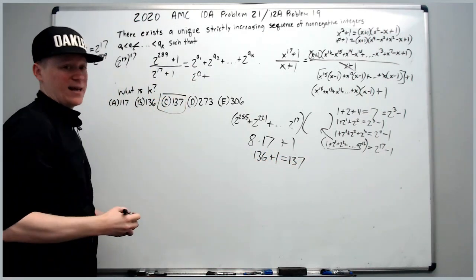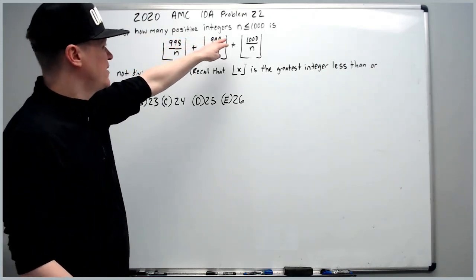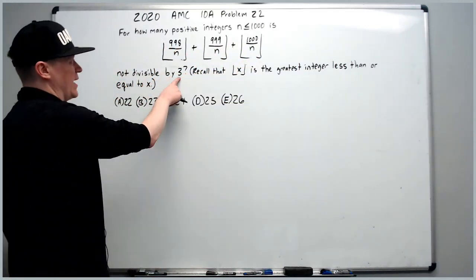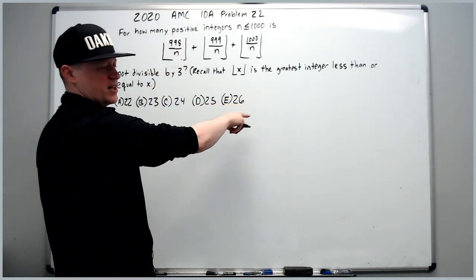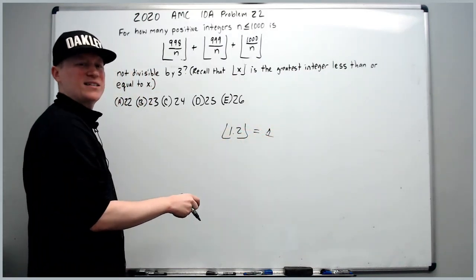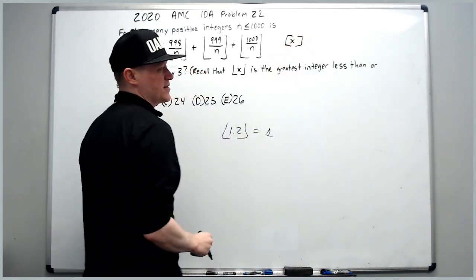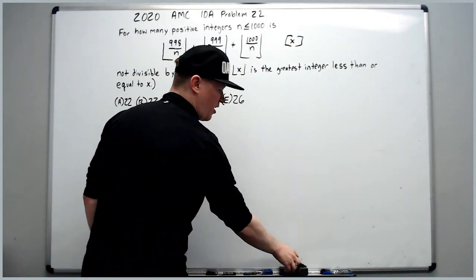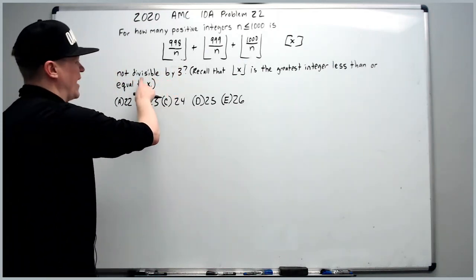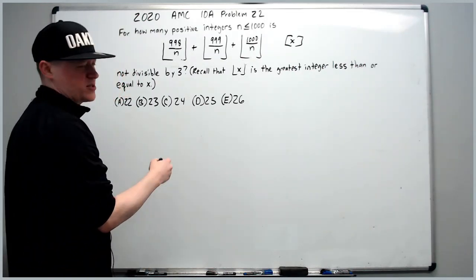On to the 2020 AMC 10A problem 22: for how many positive integers n ≤ 1000 is the given expression not divisible by 3? These are greatest integer (floor) function expressions — the floor of a number rounds down to the greatest integer less than or equal to it, sometimes written with bracket notation. Let's progress by making some observations.